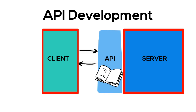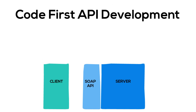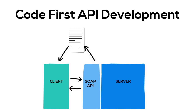A traditional approach to API development has been code first development, where, as it sounds, the API code is written first and then the contract is generated from the code. This was common in SOAP-based web services where a WSDL provided a machine-readable description of how the service can be called, what parameters it expects and what data structure it returns. This makes sense — it's like our restaurant kitchen deciding on the menu items and giving them to the waiter to write up the menu.